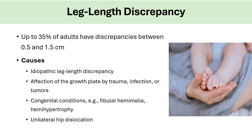Leg length discrepancy. Up to 35% of adults have discrepancies between 0.5 to 1.5 cm. So it is okay to be unequal as long as there are no symptoms.